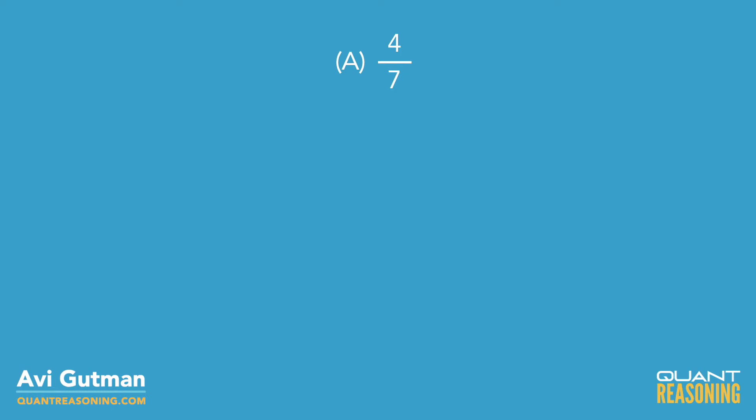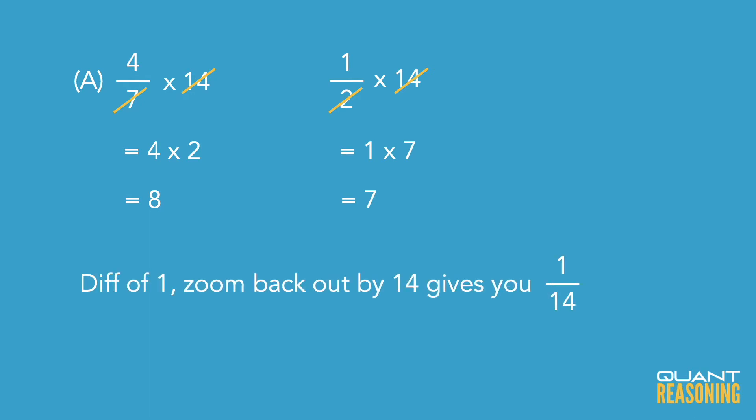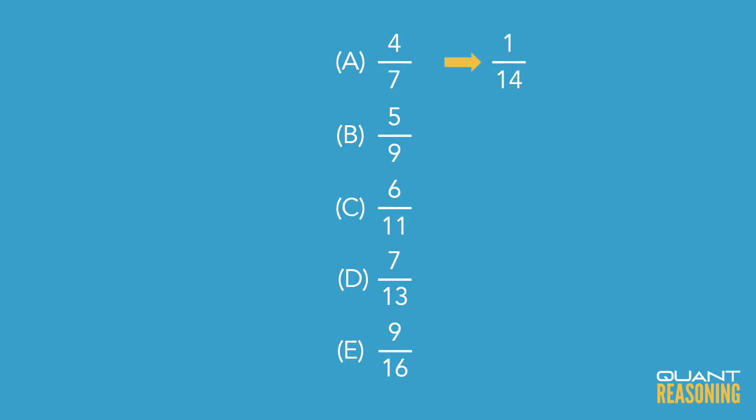Our first comparison is one half and four sevenths. We should zoom in by a factor of 14 because that would eliminate the denominators. So half times 14 is seven and four sevenths times 14 is eight. So we have a difference of one. Now zooming back out by that factor of 14, we can tell that the difference is one over 14. It's one fourteenth away from half.